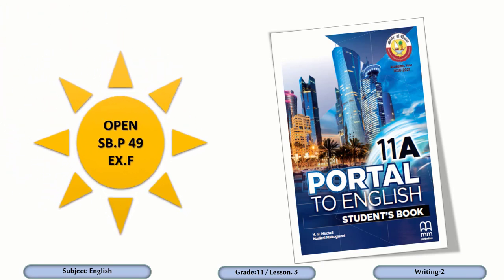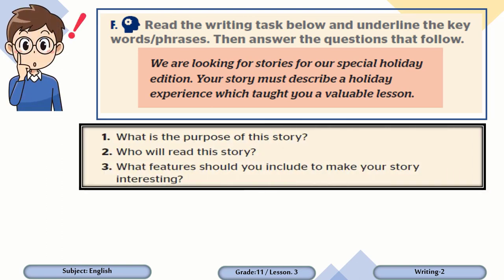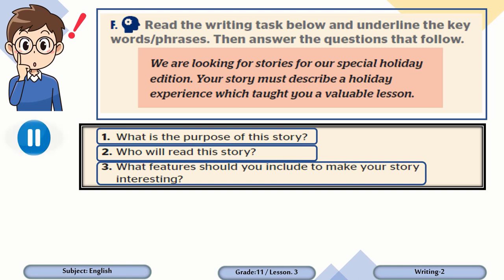Now please open your student's book, page 49, exercise F. Read the writing task and underline the keywords and phrases, then answer the questions that follow. 'We are looking for stories for our special holiday edition. Your story must describe a holiday experience which taught you a valuable lesson.' Then answer: What is the purpose of this story? Who will read the story? What features should you include to make your story interesting? Please pause the video, get your answers ready, then play again to check your answers.